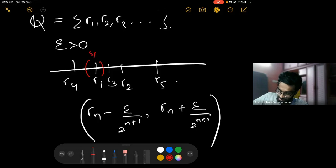In some sense, you take r1 and consider a ball of radius epsilon over 2 squared around it. You take r2 and take a ball of epsilon over 2 cubed radius around it. You take epsilon over 2^4 here, epsilon over 2^5 there.